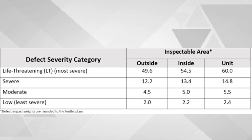And let's say that we had two inside severe — we would multiply 2 times 13.4 and that would give us 26.80. Then we would add them together: 180 plus 26.80 which equals 206.80. This is called the total defect points.